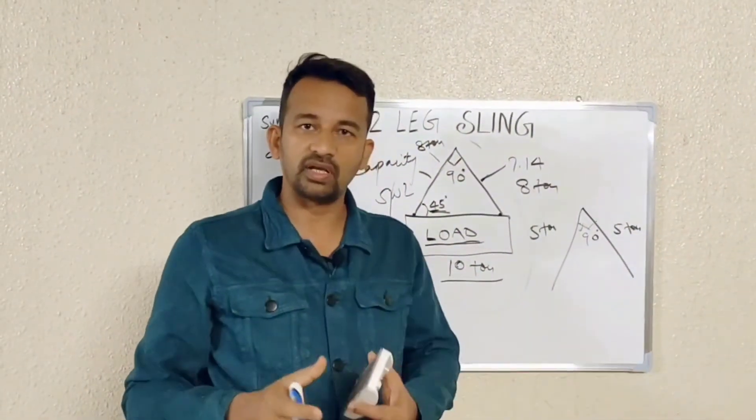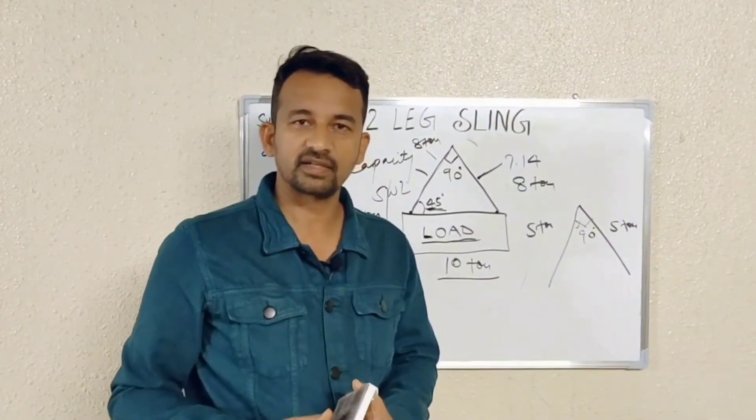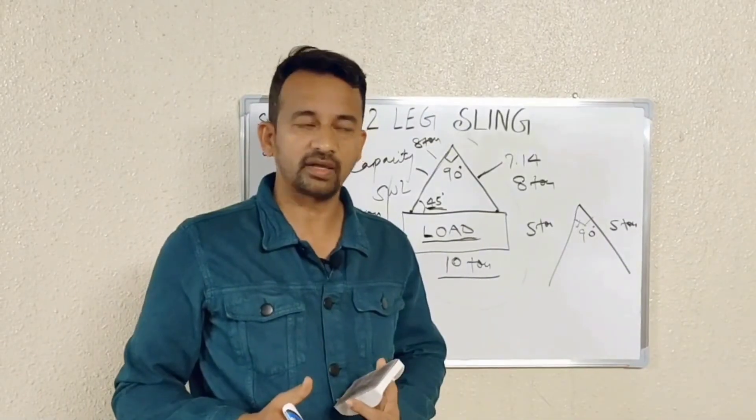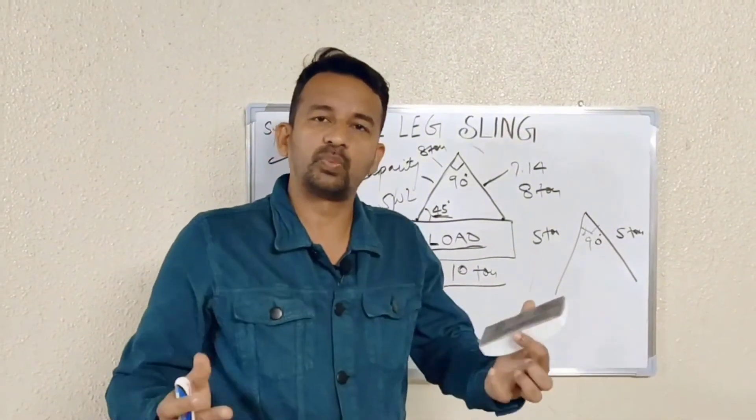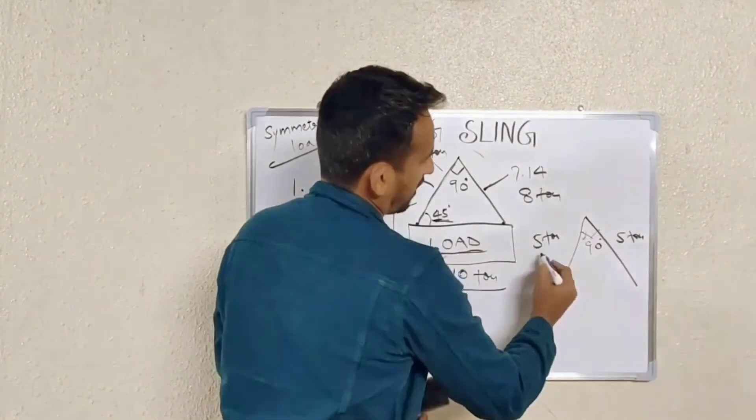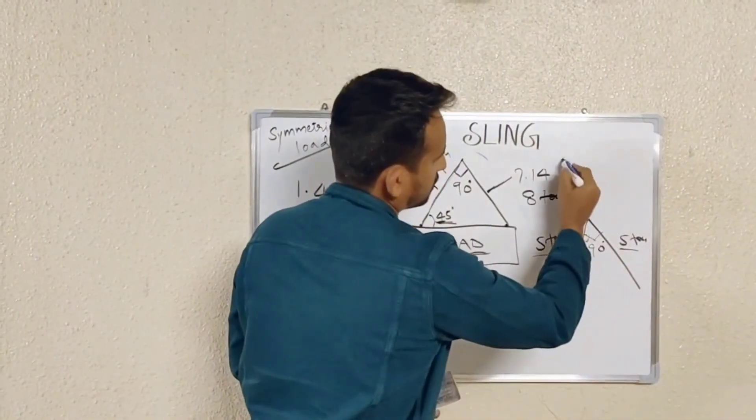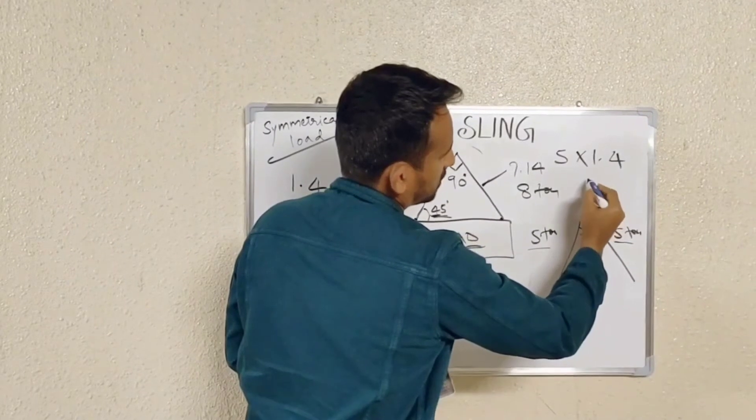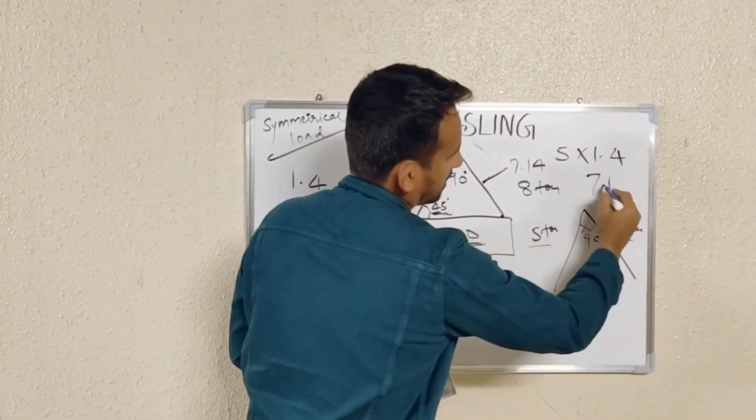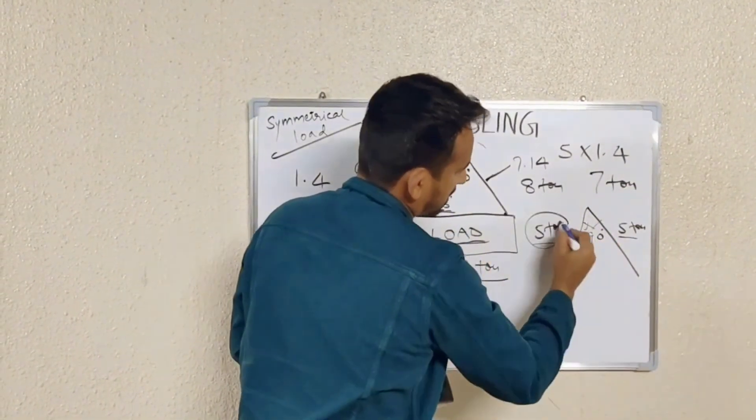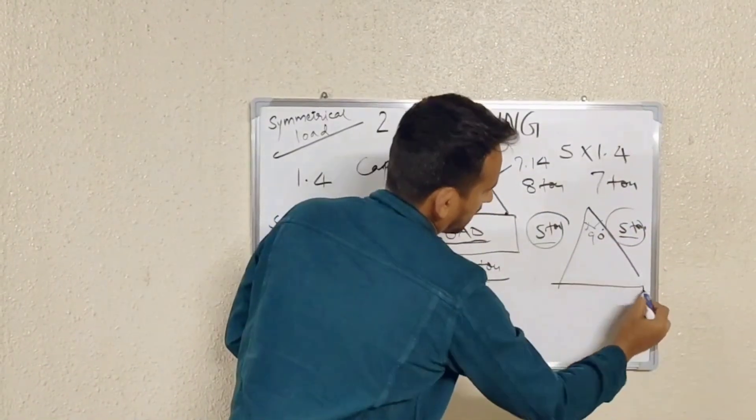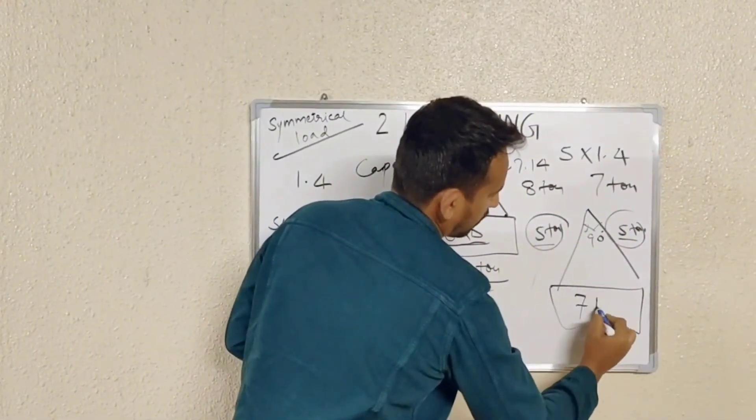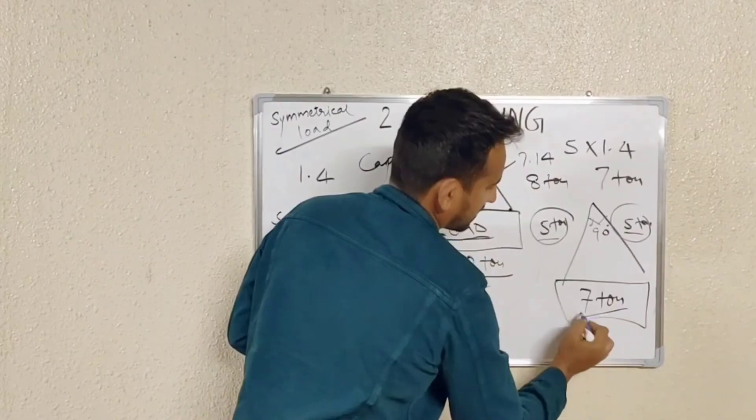So how much load you can lift now? In this case you just need to multiply the sling capacity with 1.4. So here 5 ton is your sling capacity. So 5 multiply by 1.4, which will be somewhere around 7 ton. So with two slings of 5 ton you can lift a weight or a load of 7 ton.